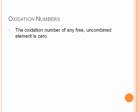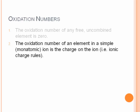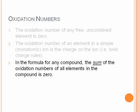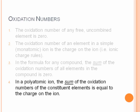The oxidation number of any free, uncombined element is zero. The oxidation number of an element in a simple or monatomic ion is the charge on that ion — that is, we use our ionic charge rules. In any compound, the sum of the oxidation numbers of all the elements is zero. Similarly, for a polyatomic ion, the sum of the oxidation numbers must equal the charge on the ion.